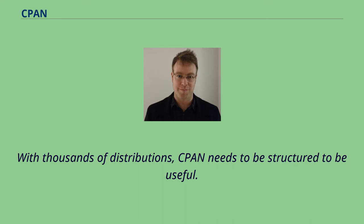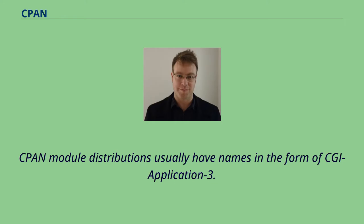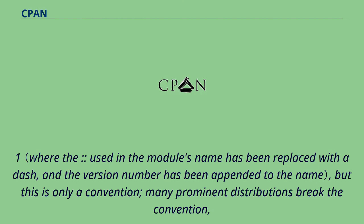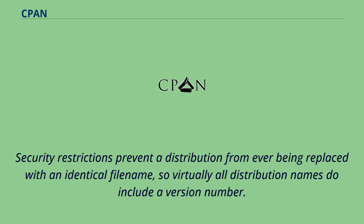With thousands of distributions, CPAN needs to be structured to be useful. Authors often place their modules in the natural hierarchy of Perl module names according to purpose or domain, though this is not enforced. CPAN module distributions usually have names in the form of CGI-Application-3.1, but this is only a convention. Many prominent distributions break the convention, especially those that contain multiple modules. Security restrictions prevent a distribution from ever being replaced with an identical file name, so virtually all distribution names do include a version number.